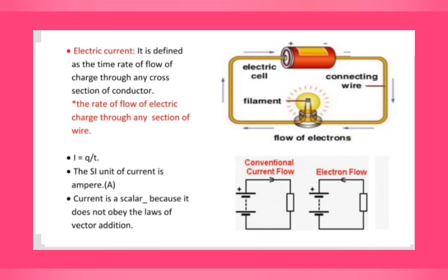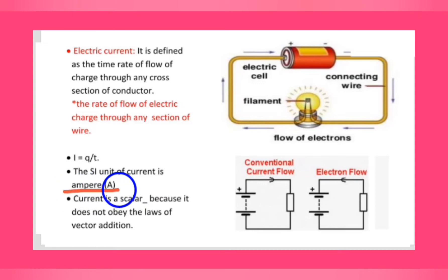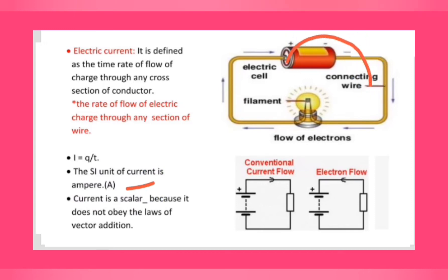Current is represented by the formula I = Q/T, that is current equals charge divided by time. The SI unit of current is ampere, written with the symbol capital A — capital because it comes under the name of a scientist — but the word 'ampere' must be written in small letters. Current is a scalar quantity because it does not obey the law of vector addition.